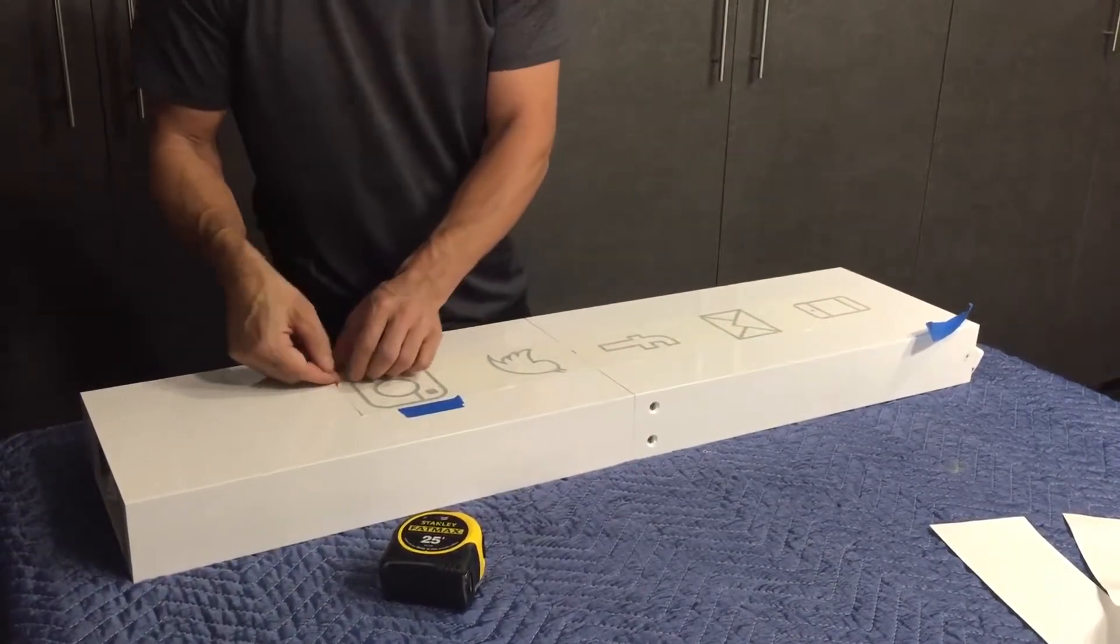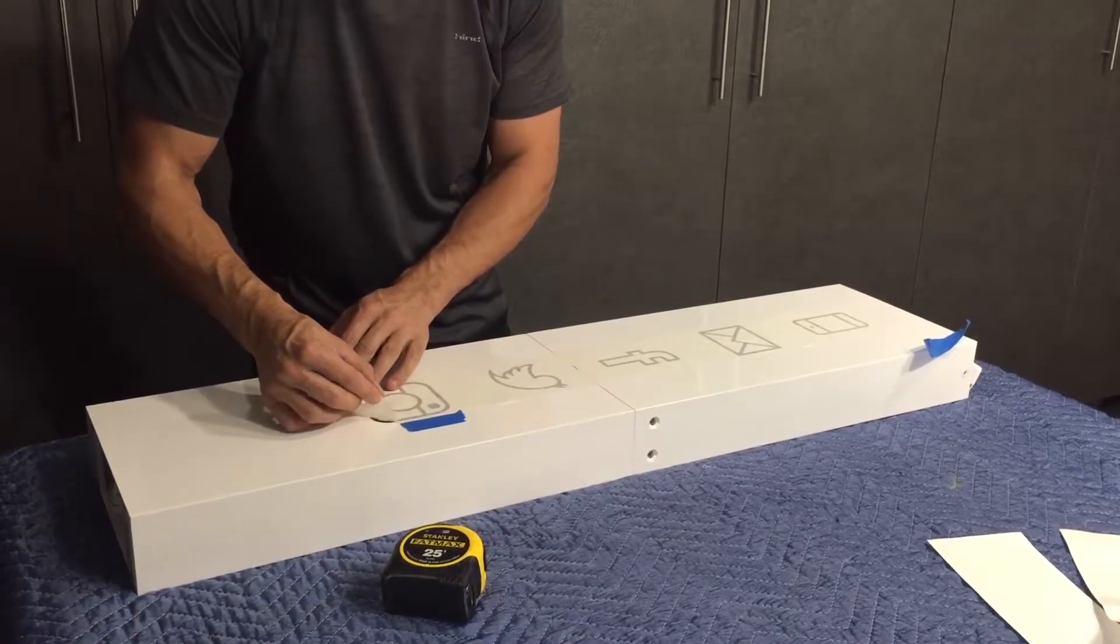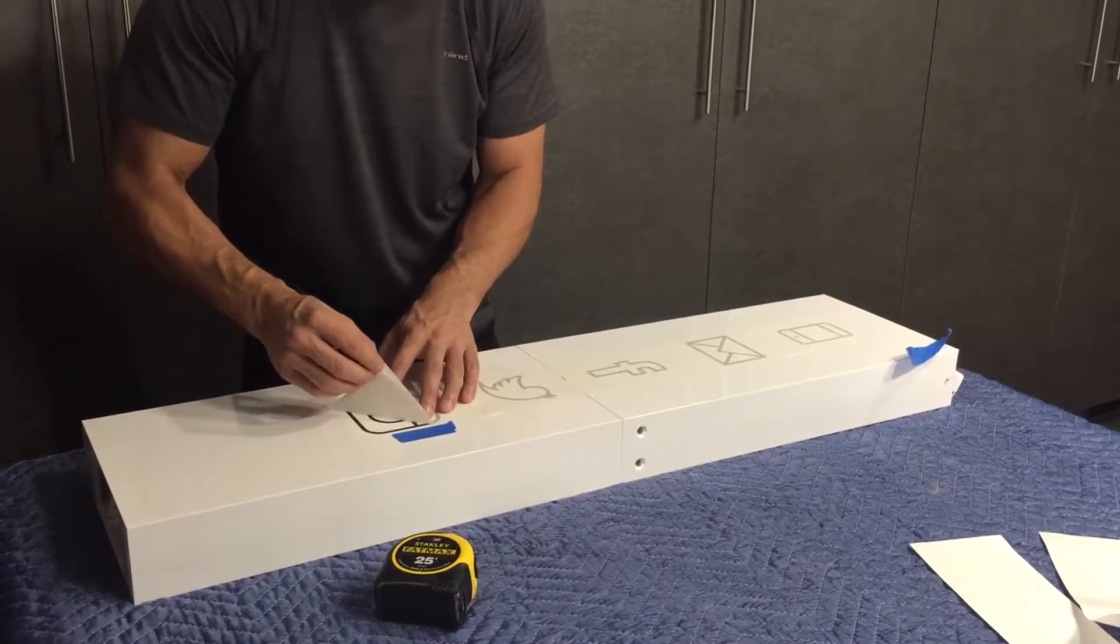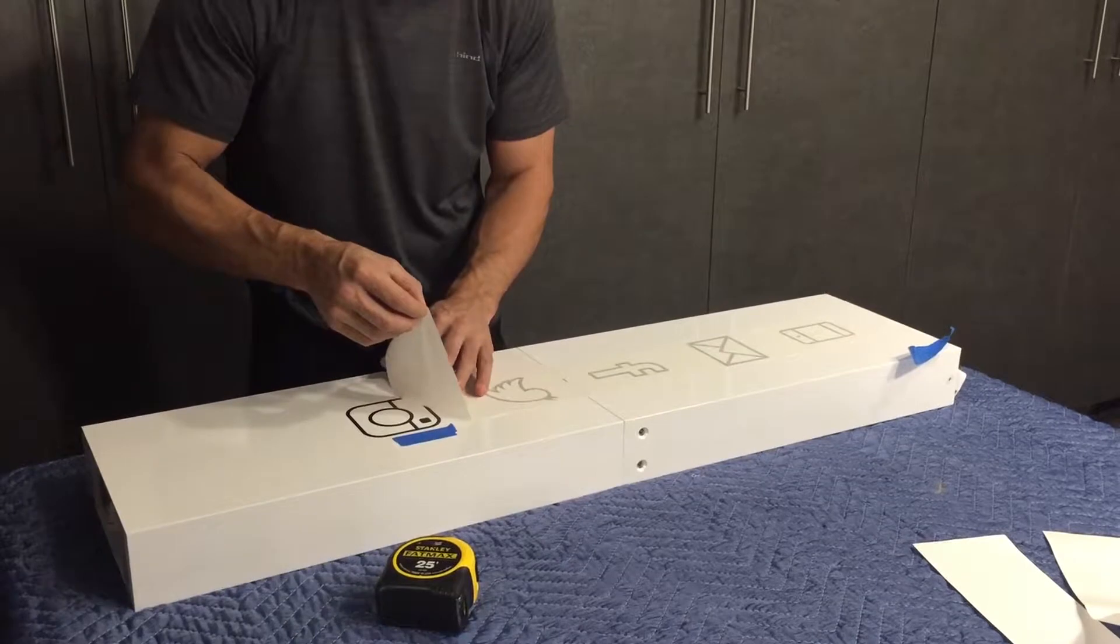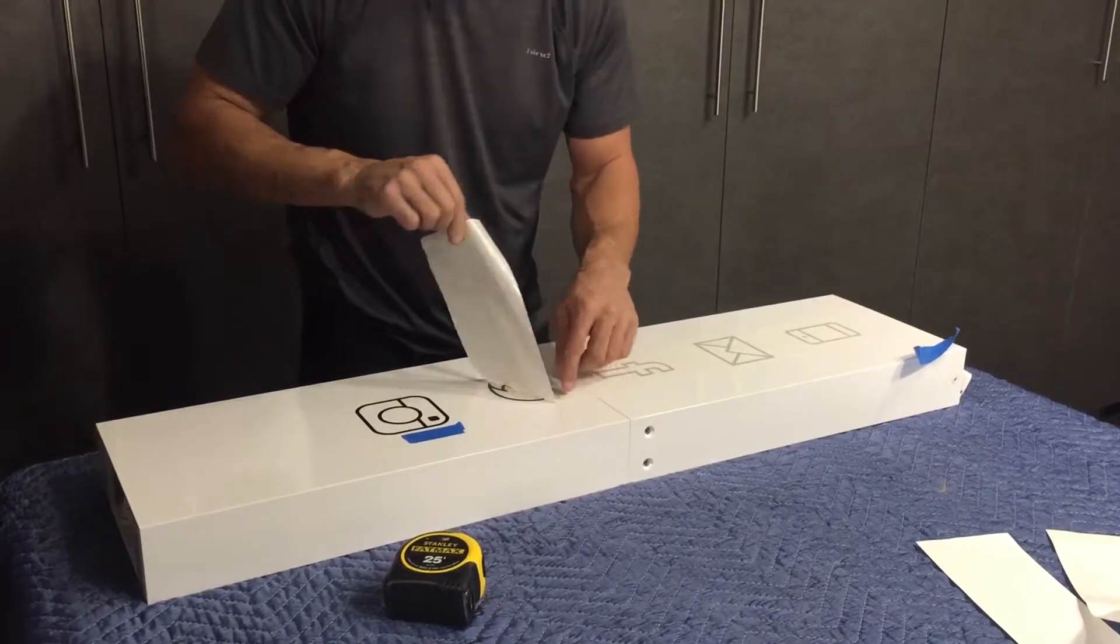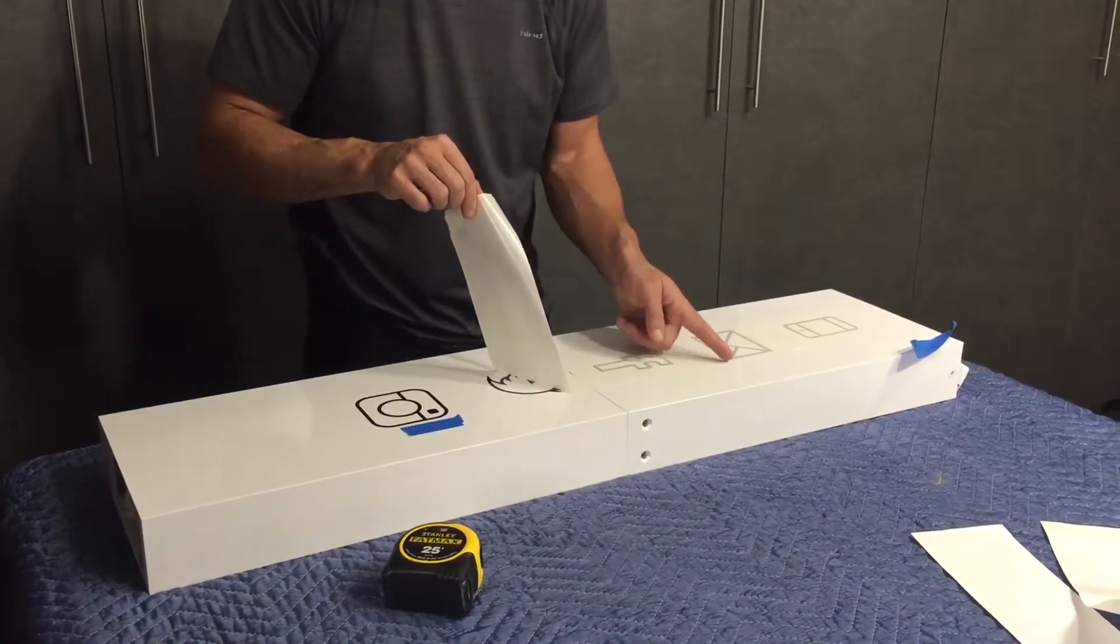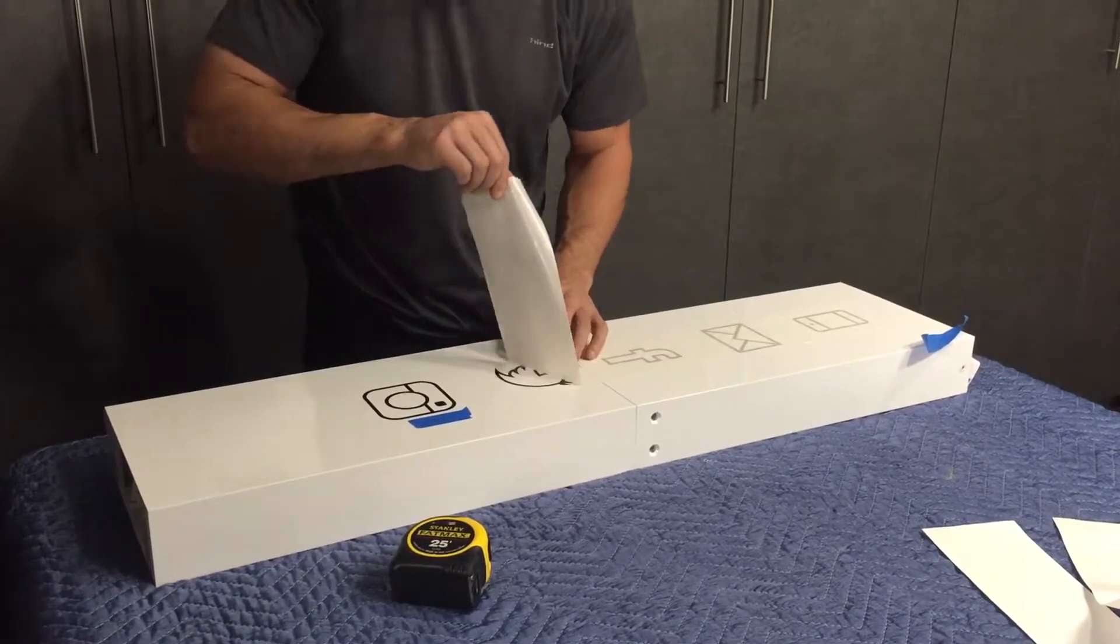We've applied the pressure to the decal. Now we are going to peel it off very slowly. If you peel it off too quick, you can pull the emblem up. I like to go a little bit at an angle too. It is helpful when you come to a straight edge like this. Coming at it on an angle versus a straight approach does help.